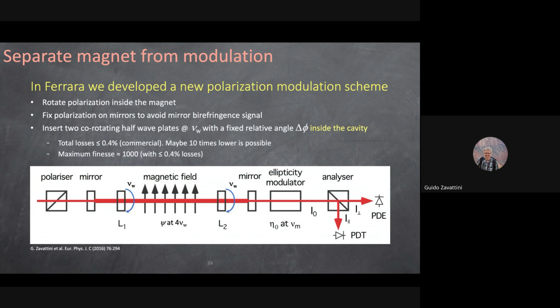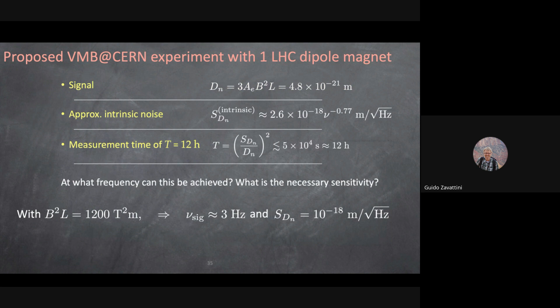The problem with putting wave plates inside the Fabry-Perot is that cavity finesse requires mirror losses of only parts per million. Inserting any optical element adds losses of ~10⁻⁴, eliminating the high multiplication factor. In principle this wasn't limiting because we weren't limited by number of passes anyway. The wave plates must be inside because mirror birefringence is large and would kill the signal if the polarization rotated at the mirrors. However in practice, the cavity with wave plates inside produced unacceptable noise levels — not feasible.